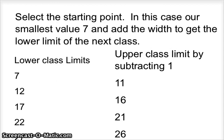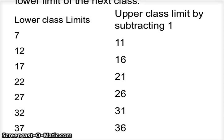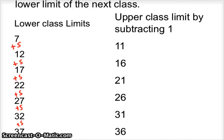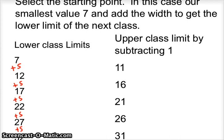Then you select a starting point. In this case, our smallest value is 7, so I'm going to use that starting point and add the width to get the lower limits of the next class. I have the lower limits and upper limits shown. We start with 7, then we add 5 and you get 12. Then you add 5, you get 17. Add 5, add 5, and you keep adding 5 on down until we have enough to cover our 6 classes. The upper classes are determined by subtracting 1 from the lower limit of your next class.